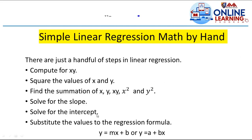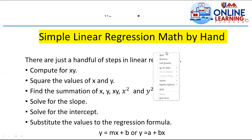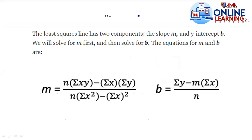Solve for the slope and then the intercept. Then substitute the values into the regression formula: y equals mx plus b, or y equals a plus bx. The least squares method has two components — the slope m and the y-intercept b. Solve for m first, then solve for b. The formula for m is: n times summation of xy minus summation of x times summation of y, all divided by n times summation of x squared minus summation of x squared.